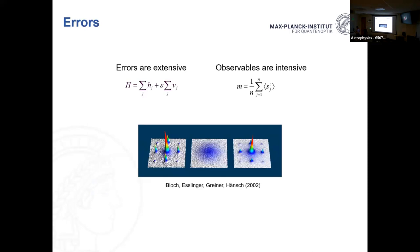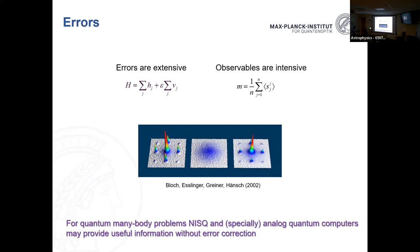Something I mentioned earlier about errors: since in quantum simulation we're looking at observables that are intensive rather than extensive, errors are not as much of a problem. That gives analog quantum simulators a significant advantage for many systems.